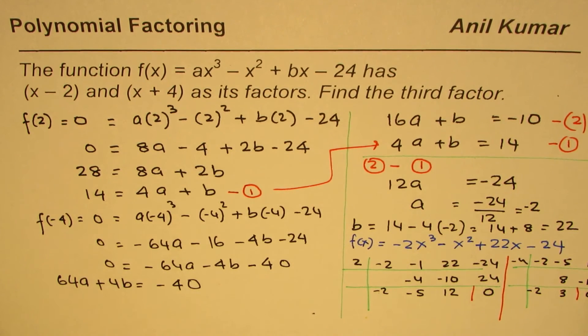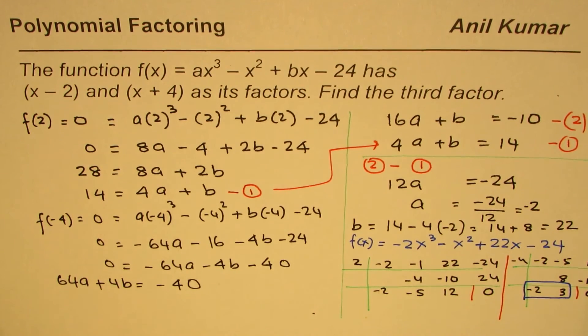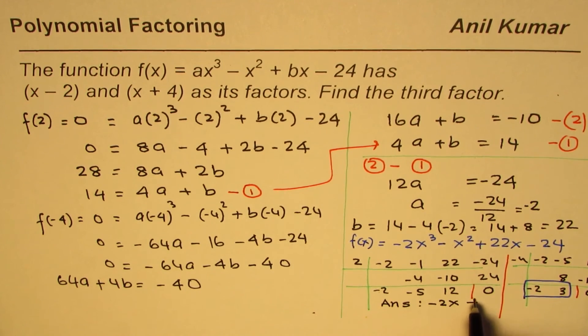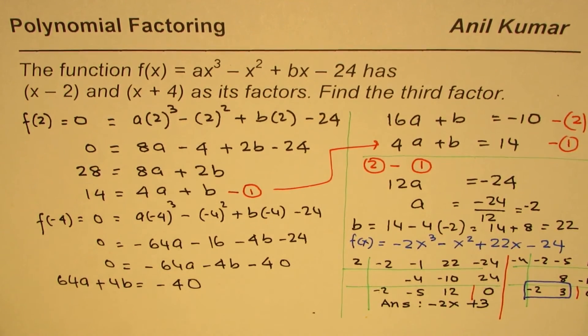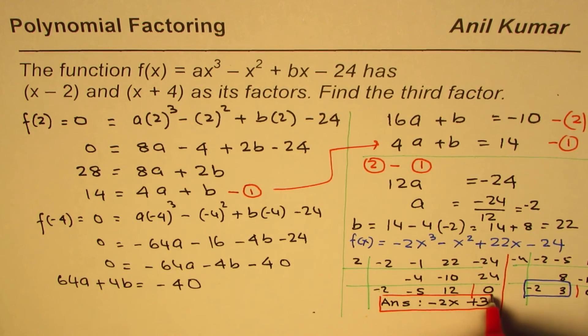There is your answer. The answer is these coefficients. The third factor is minus 2x plus 3. That is our factor and that's the third factor, okay? That's the answer.